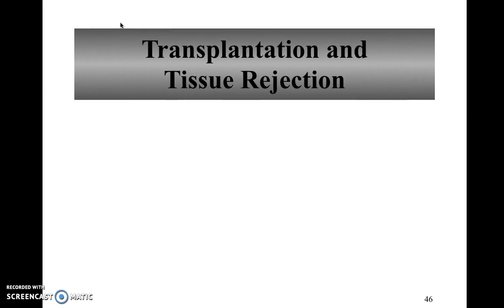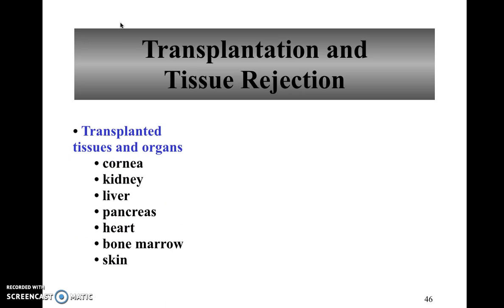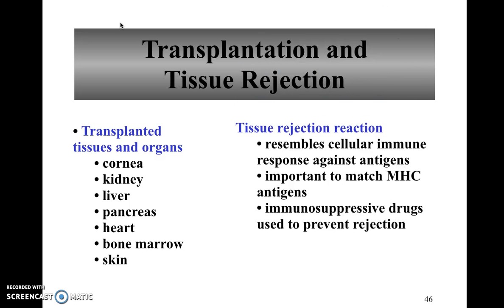So why does an organ sometimes get rejected? Organs commonly transplanted include corneas, livers, hearts, and lungs. When tissue gets rejected, it's because the recipient's body mounts a cellular immune response — cytotoxic T-cells attack and destroy the tissues of the donated organ. This tissue rejection reaction is why it's so important to match those MHC antigens.